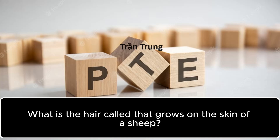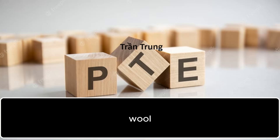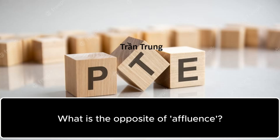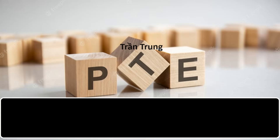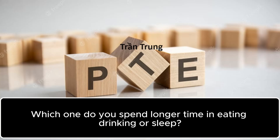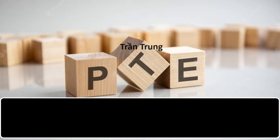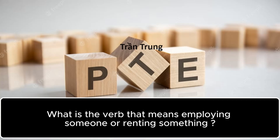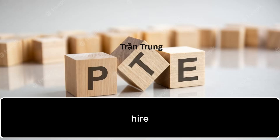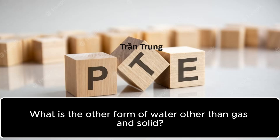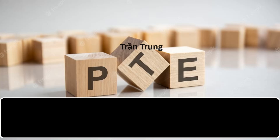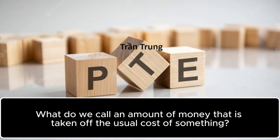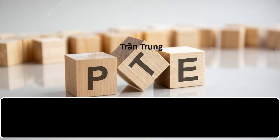What is the hair called that grows on the skin of a sheep? Wool. What is the opposite of affluence? Poverty. Which one do you spend longer time in — eating, drinking or sleep? Sleep. What is the verb that means employing someone or renting something? Hire. What is the other form of water other than gas and solid? Liquid. What do we call an amount of money that is taken off the usual cost of something? Discount.